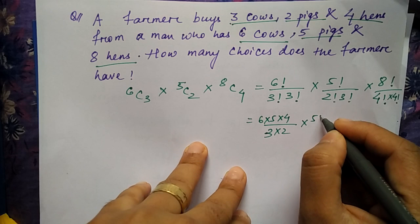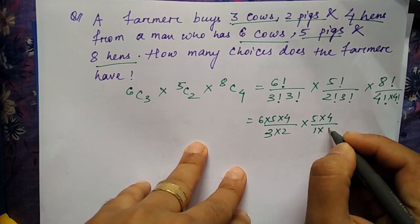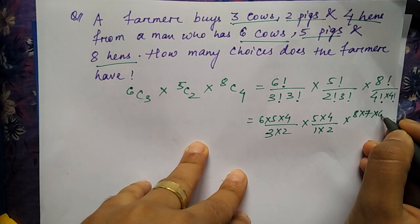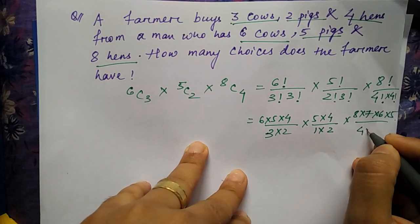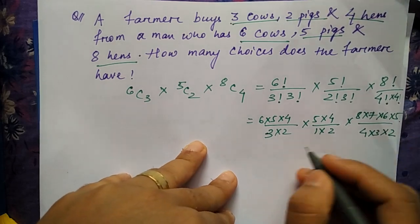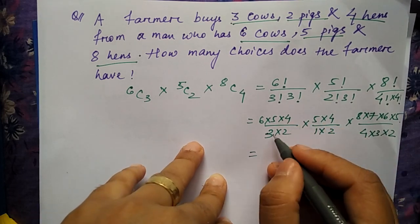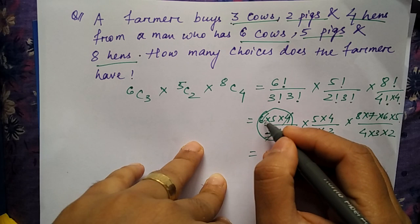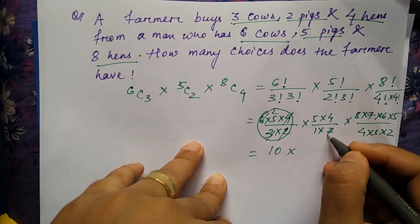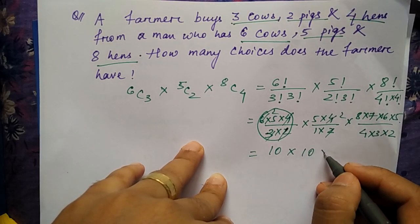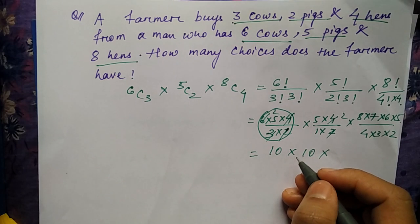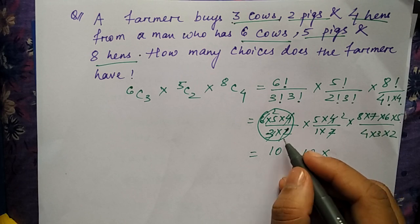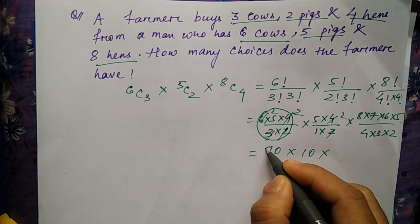Okay, so here you'll be getting after canceling the values: 10 here, you are getting 10 here, you are getting 20, and here you are getting 70. So totally you'll be getting 14000 is the answer.